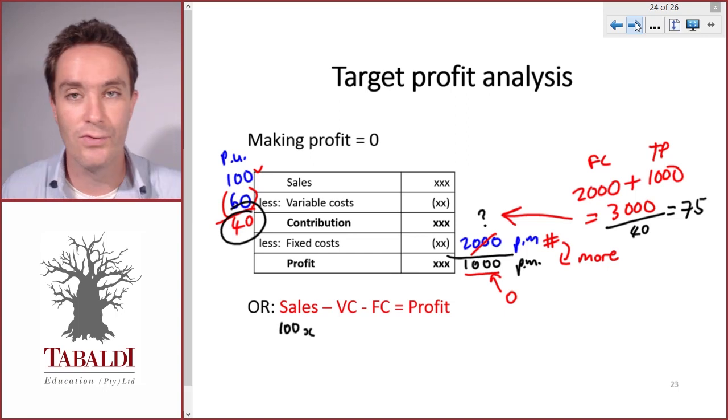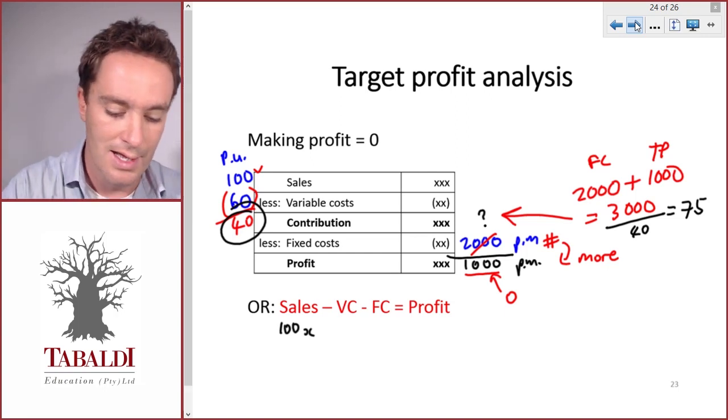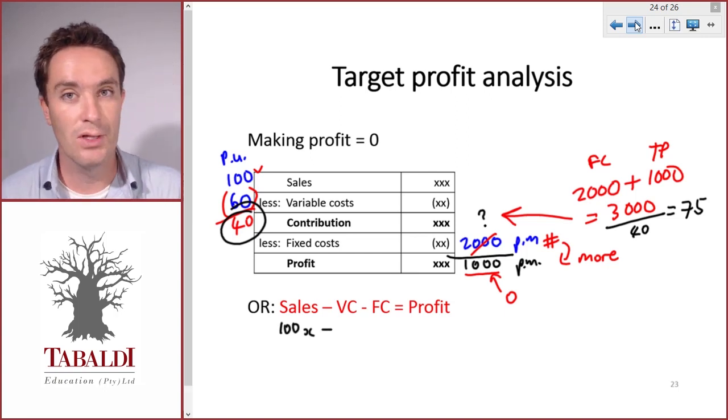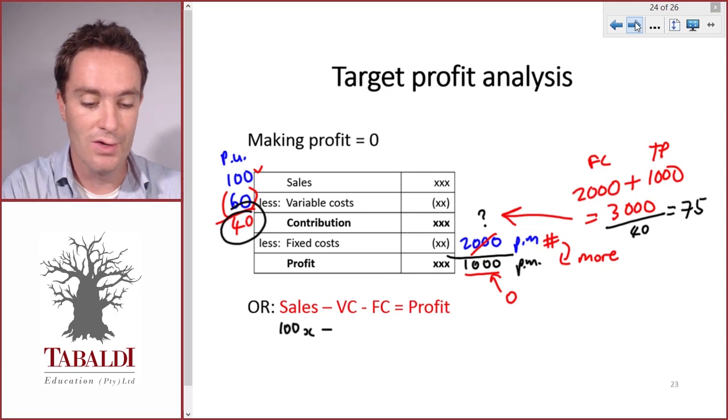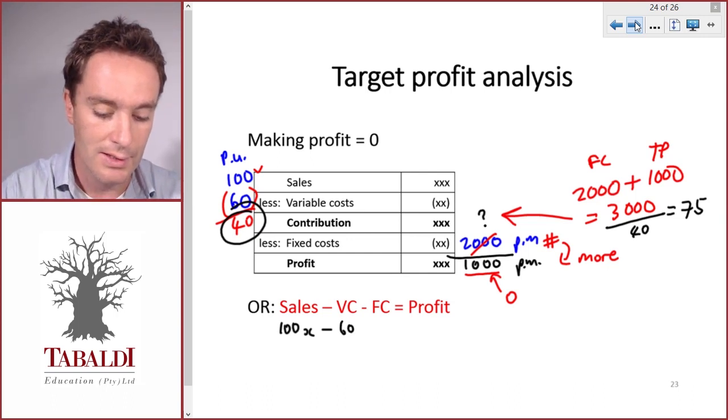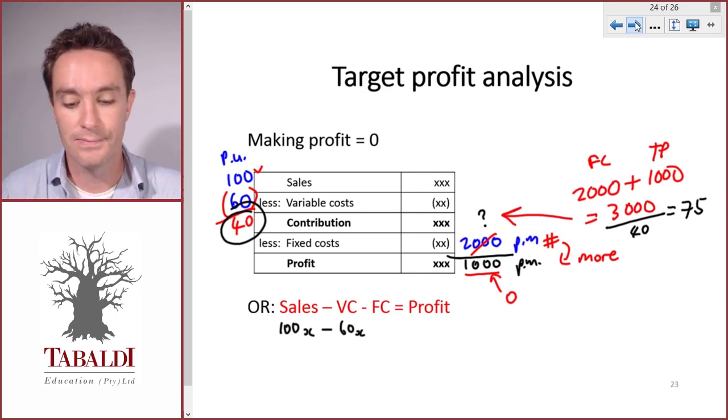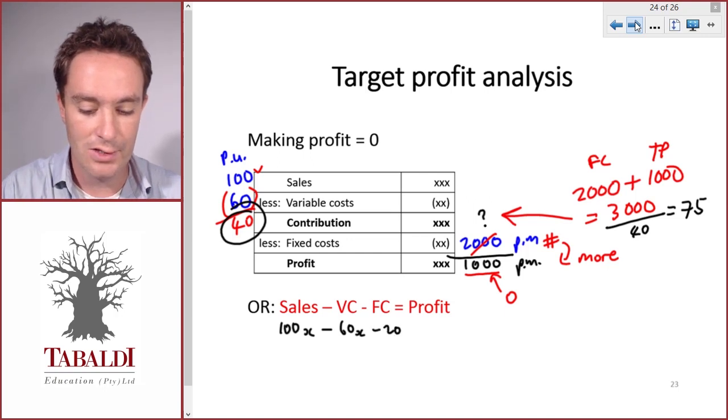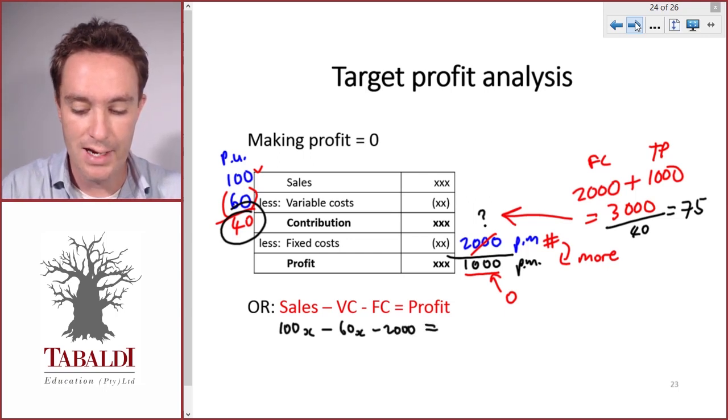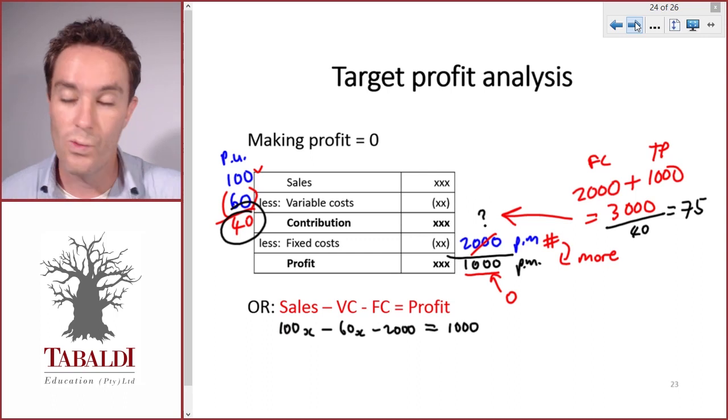Less our variable costs, so that would be our $60 per unit times the number of units, less our fixed costs of $2,000. And now we don't make profit zero, we want a profit of $1,000.